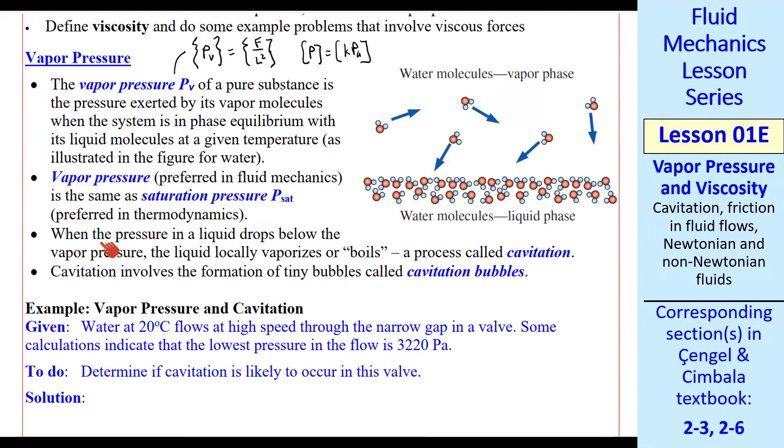An interesting phenomenon is when the pressure in a liquid drops below the vapor pressure. Then the liquid locally vaporizes into bubbles, a process called cavitation. The little bubbles are called cavitation bubbles.